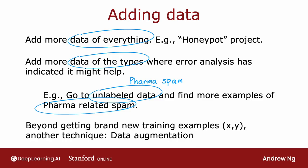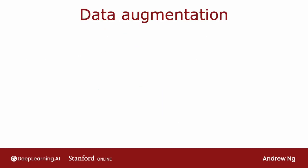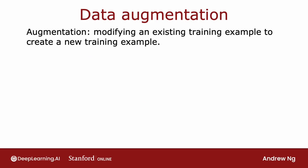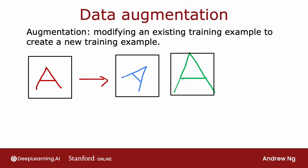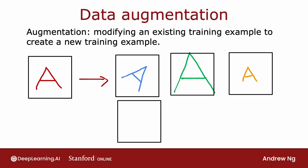Beyond getting brand new training examples, there's another technique widely used especially for images and audio data that can significantly increase your training set size. This technique is called data augmentation. The idea is to take an existing training example and create a new training example from it. For example, in an OCR problem recognizing letters A to Z, given an image of a letter you might create new training examples by rotating, enlarging, shrinking, or changing the contrast of the image — distortions that don't change the fact that it's still the letter A.